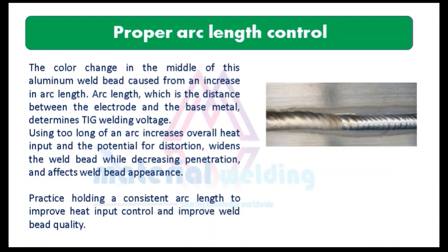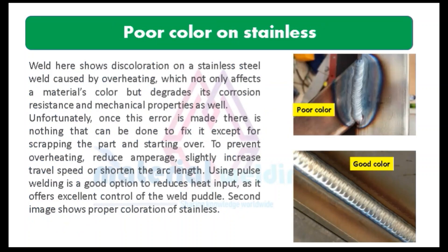Number 9 is not keeping proper arc length control. The color change in the middle of this aluminum weld bead is caused by an increase in arc length. Arc length — the distance between the electrode and the base metal — determines TIG welding voltage. Using too long of an arc increases overall heat input and the potential for distortion, widens the weld bead while decreasing penetration, and affects weld bead appearance. Practice holding a consistent arc length to improve heat input control and weld bead quality.